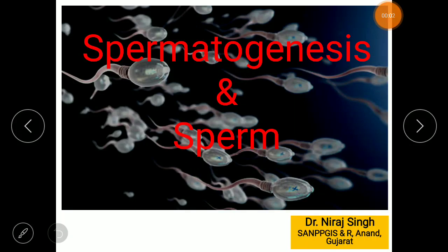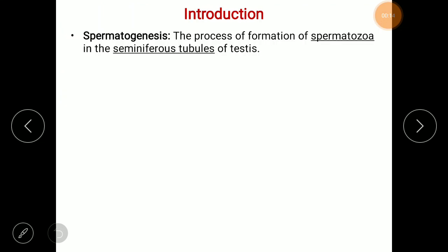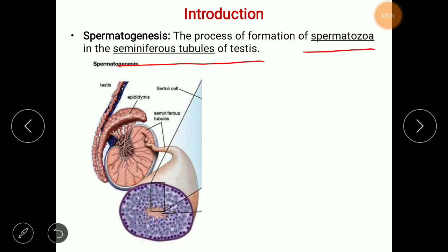In this video lecture we discuss the process of spermatogenesis and the structure of sperm. Spermatogenesis is the process of formation of spermatozoa in the seminiferous tubules of the testes. This is the cross section of testes where you can see compartment-like structures, and these compartment-like structures are the seminiferous tubules.